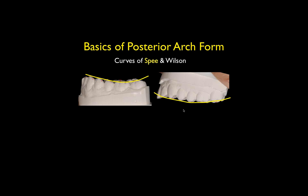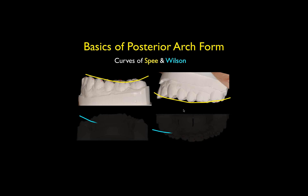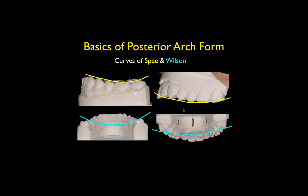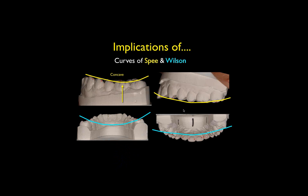The Spee curve is the concave curve on the lower and convex on the upper, drawn across the cusp tips of the lower posterior teeth looked at from the buccal. The Wilson curve is looked at from the distal or mesial, and it's a line drawn across the buccal cusp tips defining a curve as well. The concavity in the Spee curve on the lower defines the lowest or shortest tooth in the arch, which typically occurs somewhere in the middle of the lower first molar. The convex nature of the upper Spee curve defines the longest tooth in the arch, which occurs somewhere between the buccal cusp tip of the second bicuspid and the mesial buccal cusp tip of the upper first molar.